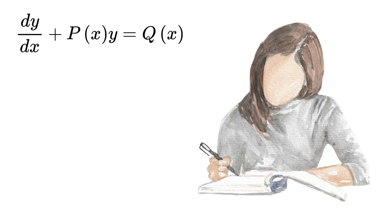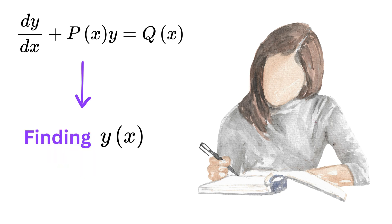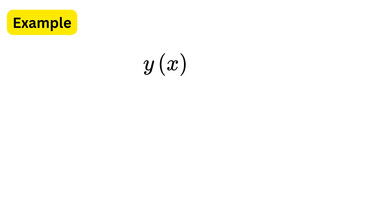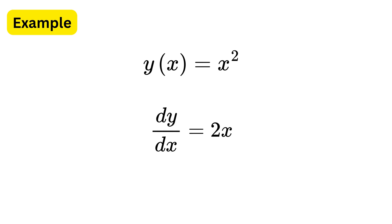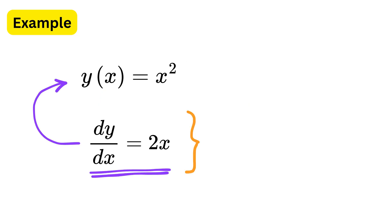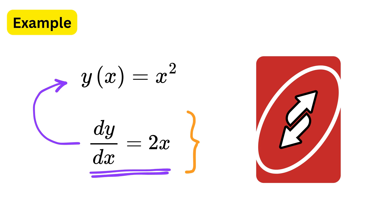Solving a differential equation simply means finding a relation between x and y that produces the given equation. For example, if y equals x squared, then dy/dx equals 2x. In a differential equation we are given the derivative first, like dy/dx equals 2x, and our job is to work backwards and find which y produces this rate of change. Solving it is basically reversing the process of differentiation.